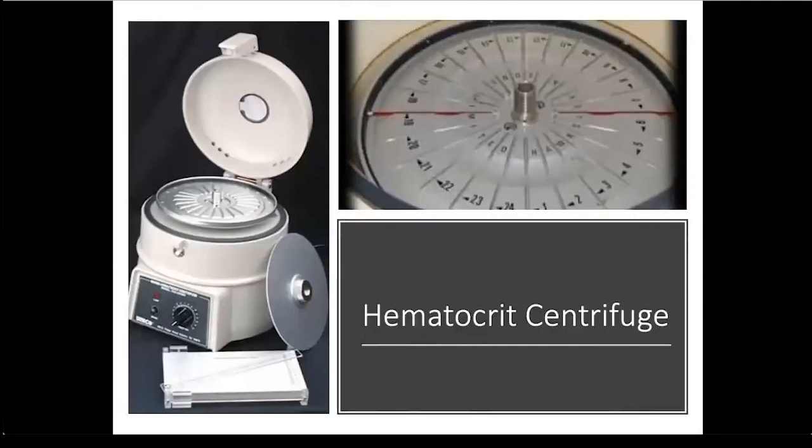Before we move on to a hematocrit, I wanted to show you what a centrifuge looks like. This is the piece of equipment that is used to separate the blood into the three columns that I showed you before. Capillary tubes filled with blood are placed into the centrifuge, and the centrifuge spins the blood at a high RPM to separate the blood into the three columns.